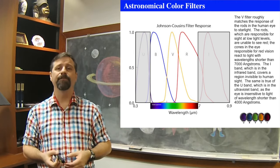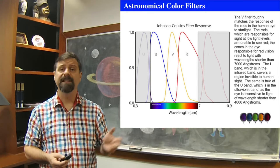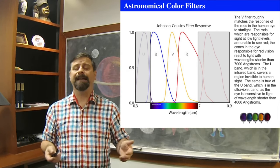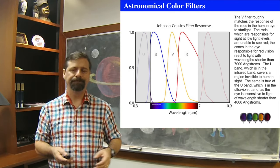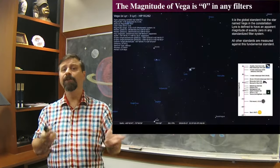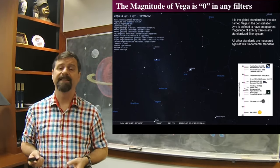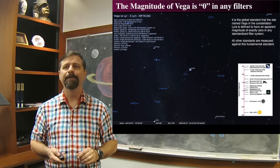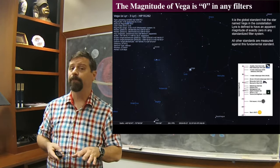Just as with Pogson's system from last time, in any filter system — including Johnson-Cousins — the definition of zero magnitude is the star Vega. So we start with that idea and ask: how bright or dim is the object with respect to Vega? We use Vega because it passes across the zenith for many observers in the Northern Hemisphere.